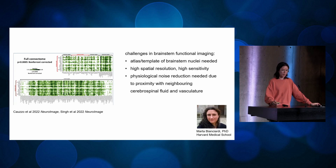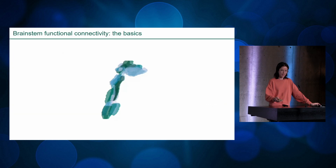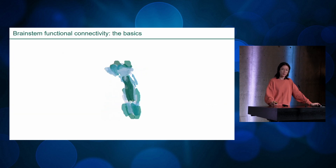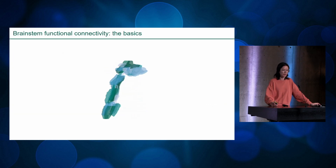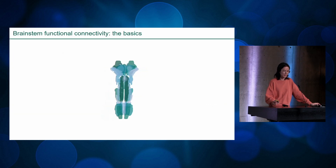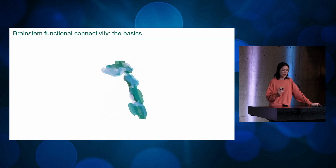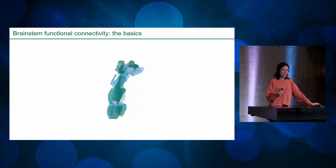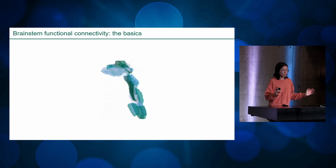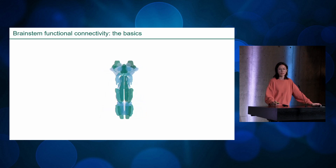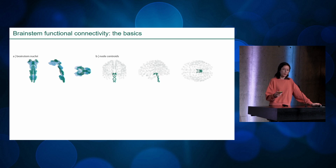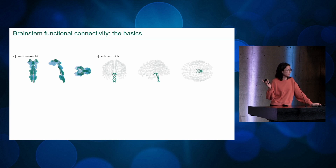Here is what the brainstem looks like with those 58 nuclei: eight are in the midline and 25 are bilateral — left and right hemisphere. I'm mostly plotting them as centroid coordinates, which is easier to see, but I also wanted to show the volumes so you know what they look like.